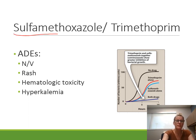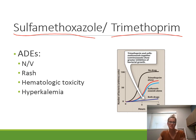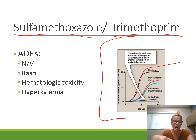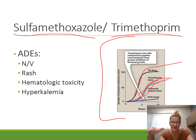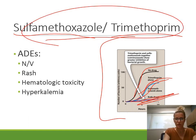Sulfamethoxazole and trimethoprim (TMP-SMX) are both folate antagonists that have a synergistic effect when combined. Data shows that either drug alone still allows significant bacterial growth, but combining them nearly eliminates growth. They are always given together — brand names include Bactrim, Bactrim DS (double strength), and Septra. Co-trimoxazole is another name used because both drugs are combined.